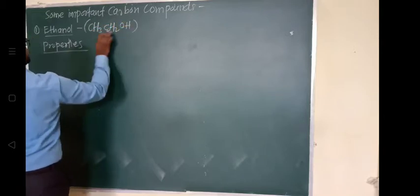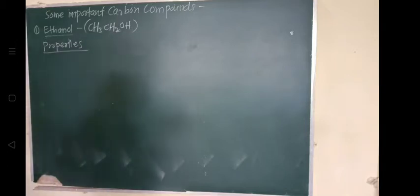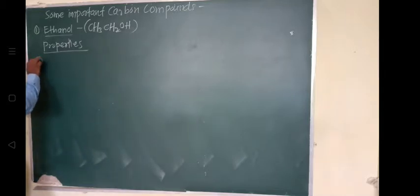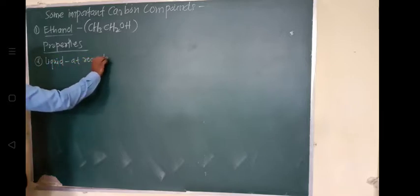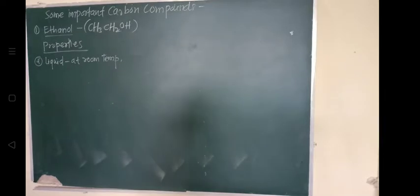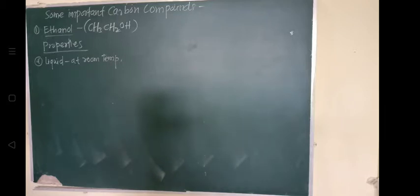Ethanol is a liquid at room temperature and it is a volatile substance. Its melting point is 156 Kelvin, which is lower than zero degrees Celsius, and its boiling point is 351 Kelvin.